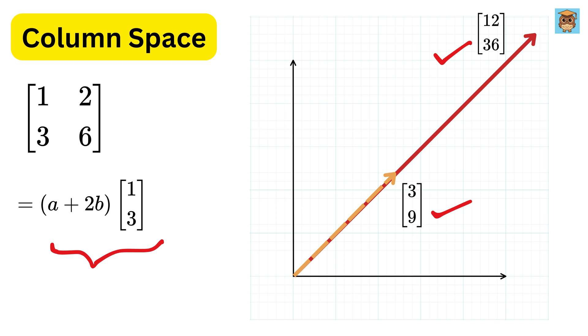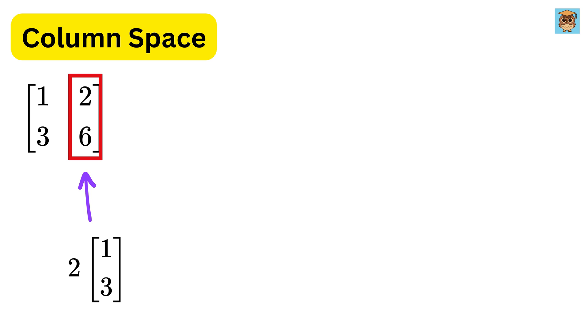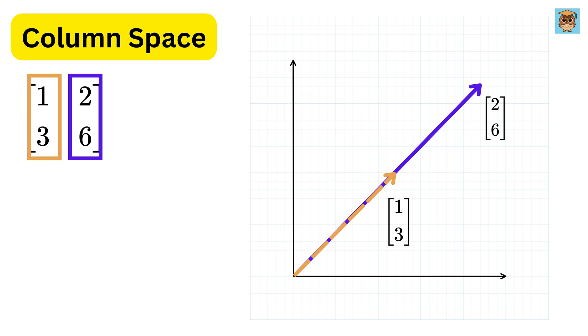In other words, this matrix can only take us along one specific line in space, the line spanned by the vector 1,3. That line is what we call the column space of this matrix. It's the set of all possible outputs you can get by multiplying this matrix with any input vector. Check closely. The second column is just 2 times the first one, or it is linearly dependent upon the first column.